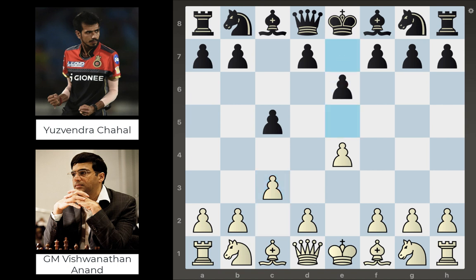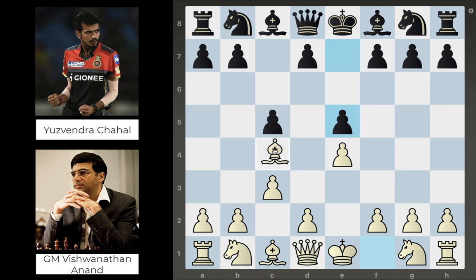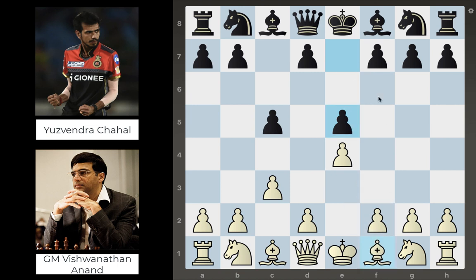Yuzi continues with e5. This is not necessarily a terrible move, but what it does is deny Yuzi the opportunity to play e6 later in the game if he needs to. Because very often in the Sicilian, you'll see e6 played as a response to bishop to c4, since that bishop can have some nasty threats early on. You like to see e6 in the Sicilian to keep that at bay — but he can't play that anymore.